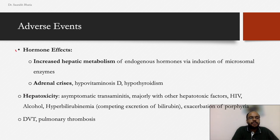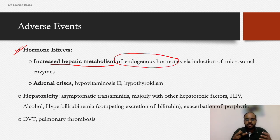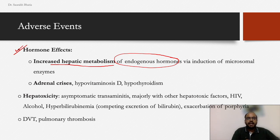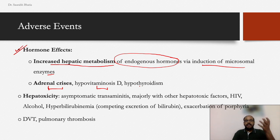Additional adverse events relate to hormonal effects: rifampicin increases hepatic metabolism of endogenous hormones through microsomal enzyme induction. This can be severe enough to cause adrenal crisis, hypovitaminosis D, or hypothyroidism. Patients on rifampicin should be monitored for decreased endogenous hormone levels.